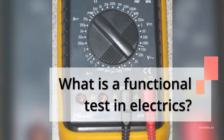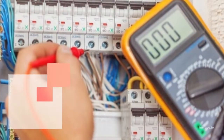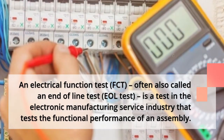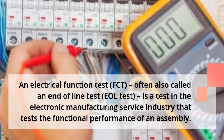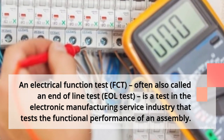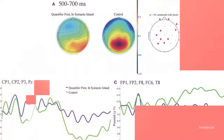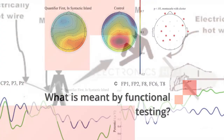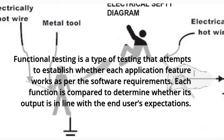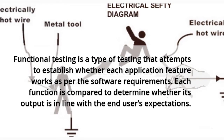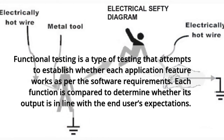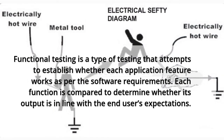What is a functional test in electrics? An electrical function test (FCT), often also called an end-of-line test (EOL test), is a test in the electronic manufacturing service industry that tests the functional performance of an assembly. Functional testing is a type of testing that attempts to establish whether each application feature works as per the software requirements, with each function compared to determine whether its output is in line with the end-user's expectations.